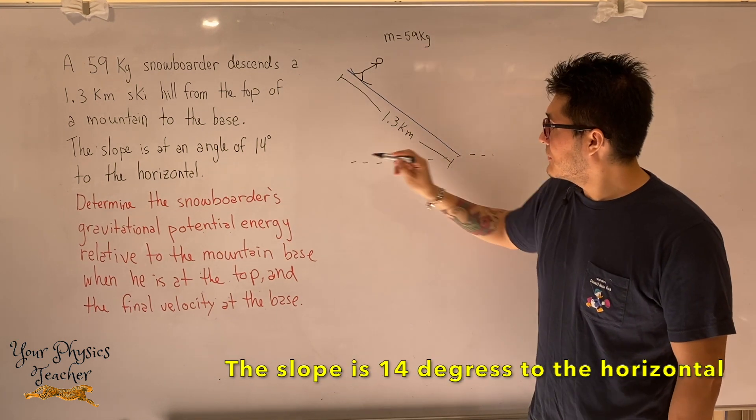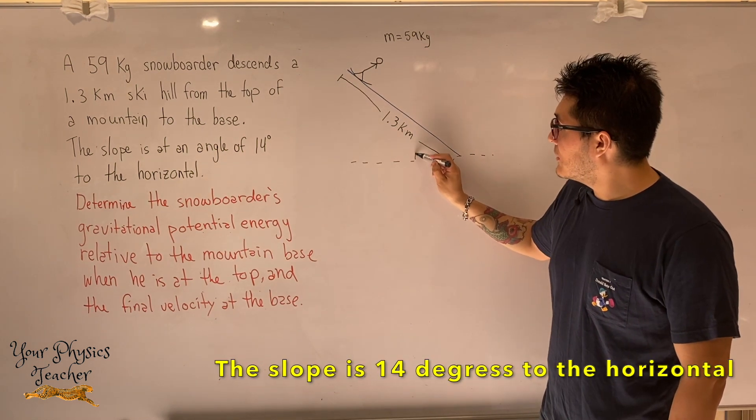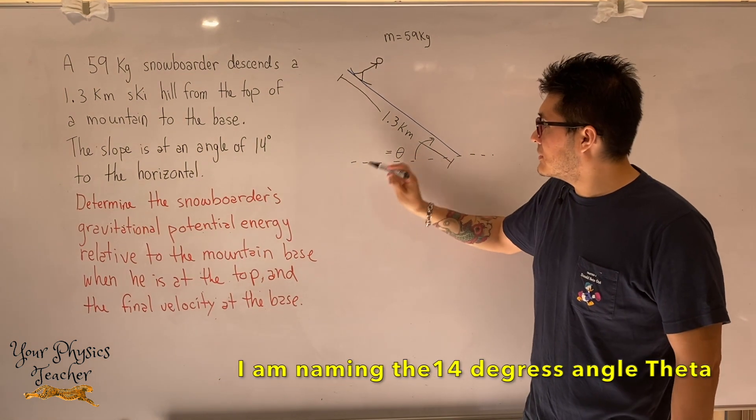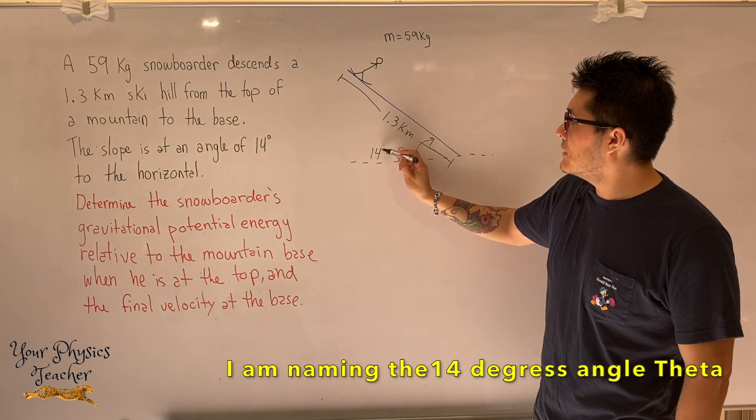They're telling us that the slope of this ski hill is 14 degrees to the horizontal. So a horizontal, and here we have a degree of, let's call it theta. They don't tell us, but it's common to call it theta. 14 degrees.